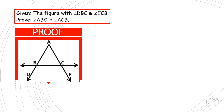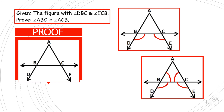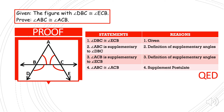Problem number six. The figure with angle DBC is congruent to angle ECB. Prove that angle ABC is congruent to angle ACB. Just like our previous example, we apply supplementary angles. So here is our proof. Statement number one: angle DBC is congruent to angle ECB because it was given. Angle ABC is supplementary to angle DBC by definition of supplementary angles. Angle ACB is supplementary to angle ECB by definition of supplementary angles. Finally, our conclusion: angle ABC is congruent to angle ACB by the supplement postulate. QED.